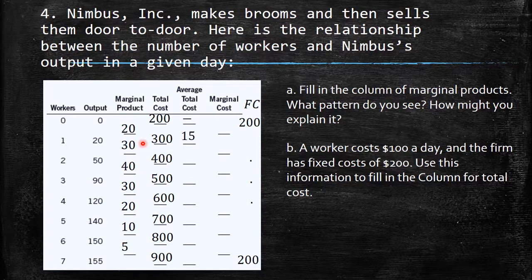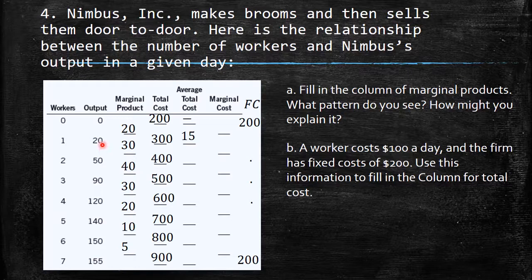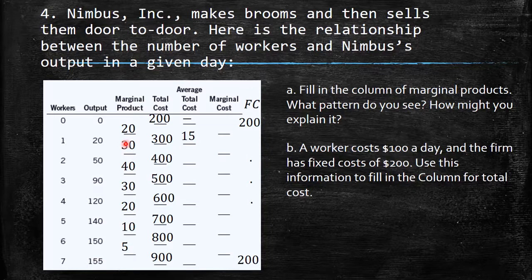A worker costs $100 per day and the firm has fixed costs of $200. Fill in the total cost column. Fixed cost is $200 for every output level. Total cost starts at $200 when zero workers are hired, then increases by $100 for each additional worker. Average total cost at zero output is indeterminate.